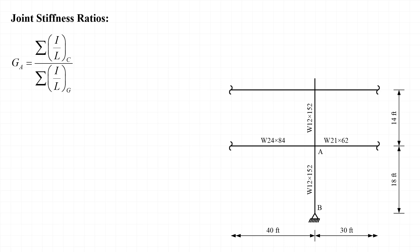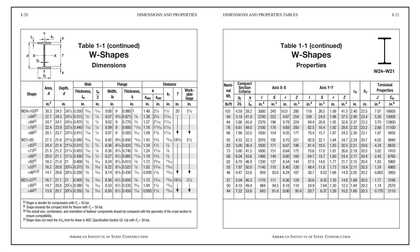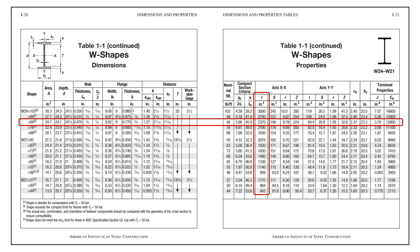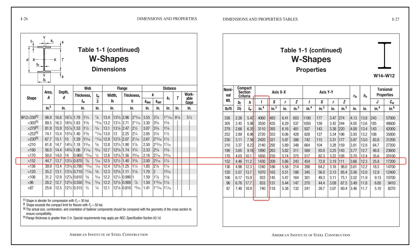We'll need to look up the members' moments of inertia in the steel construction manual. All members are bent about their strong axes in the plane of the frame, so we need the strong axis or x-axis moment of inertia. For the W24x84, I_x = 2370 in⁴; for the W21x62, I_x = 1330 in⁴; and for the W12x152, I_x = 1430 in⁴.